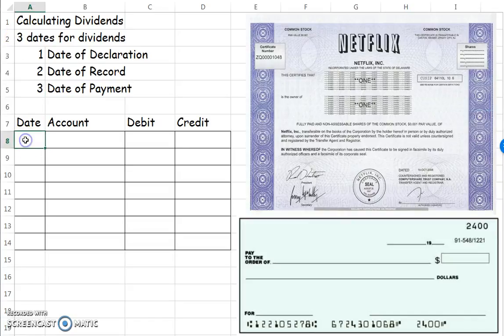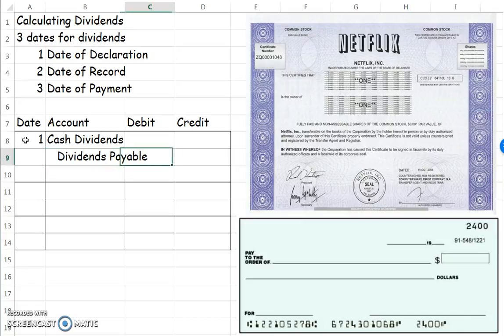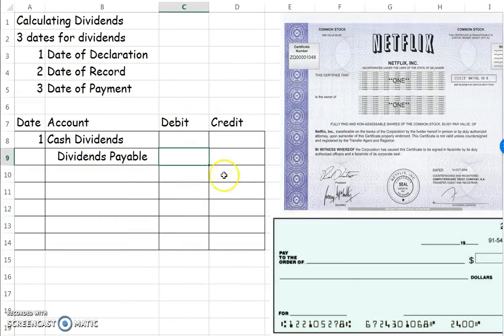Here's what the journal entries are going to look like. On the first one, we're going to debit an account called cash dividends, and we're going to credit an account called dividends payable. So we're setting up our liability. It would be for whatever amount we're going to pay in total — let's say it's $100,000.